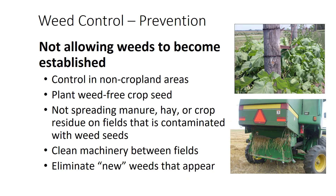There are four main systems of controlling weeds. Preventative — not letting weeds become established. Cultural — practices like adjusting planting date that aid or deter weed development. Mechanical — cultivation or hand-pulling as examples. And chemical — herbicide application.